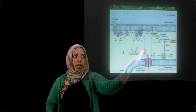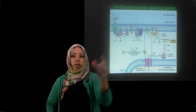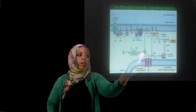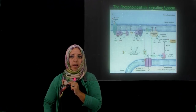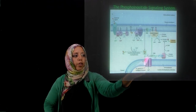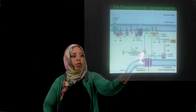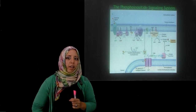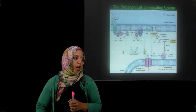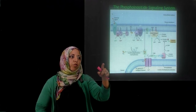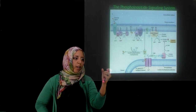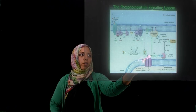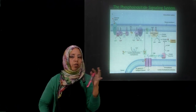DAG is one of the three secondary messengers produced. IP3 is the second secondary messenger. The third is calcium, because IP3 binds to an IP3-gated calcium transport channel within the ER membrane, which activates it and triggers the transport of calcium from the lumen of the ER into the cytosol.